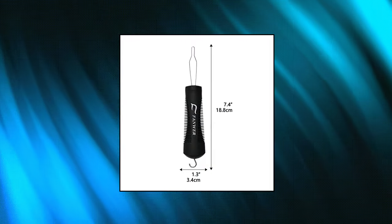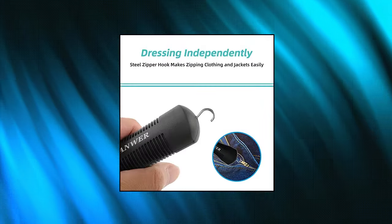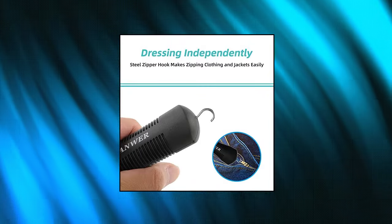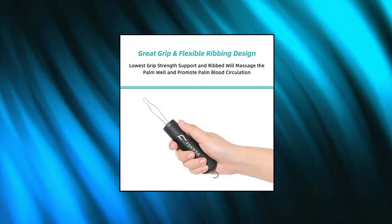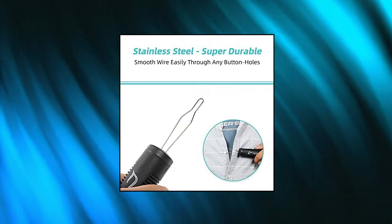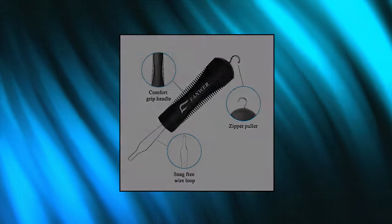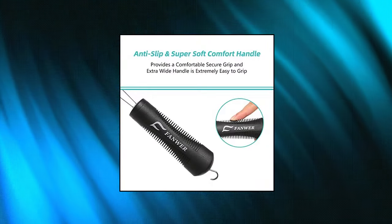Fanware two-pack button hook dressing aids with zipper pull, button aid and zipper pull helper for button assist device with comfort wide grip, easily button clothes. Eliminates the pain and frustration that comes from buttoning. The non-slip handle provides a comfortable secure grip to support seniors who want to dress and live independently. Fit for any size of button, the button hook makes dressing hassle-free.